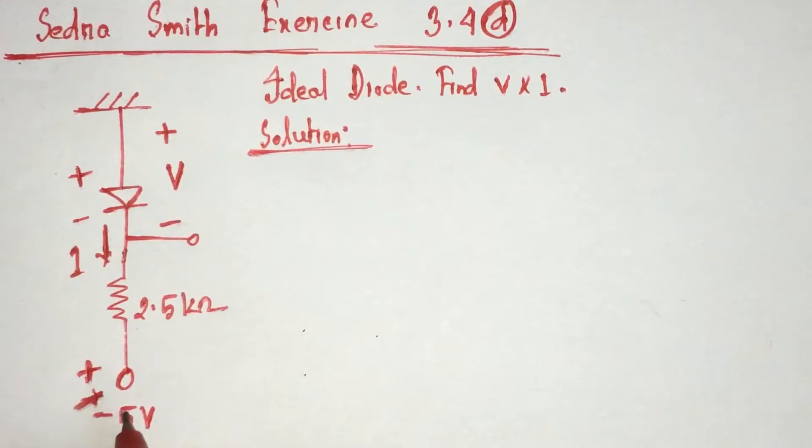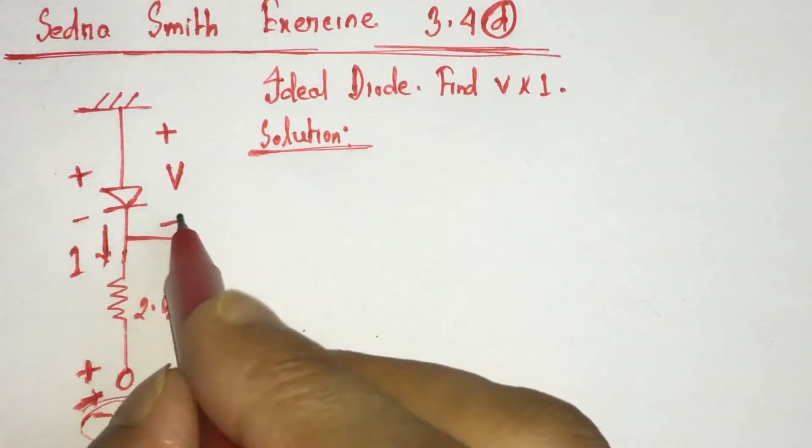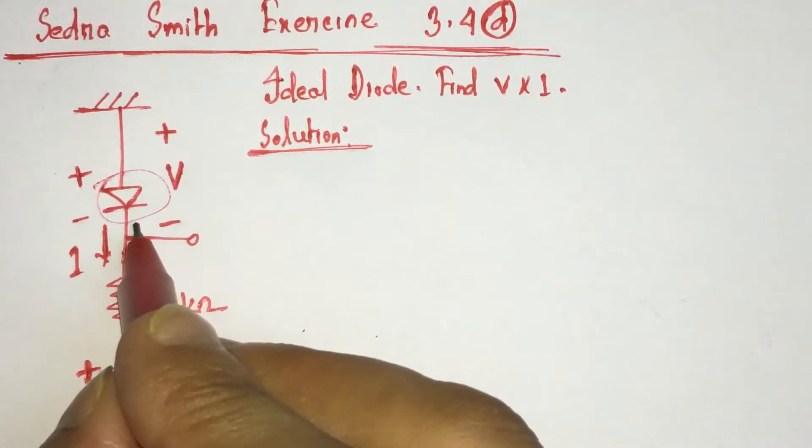Although this is plus, the biasing voltage is minus 5 volt. That means this minus 5 volt is forward biasing this diode, so the diode is conducting.